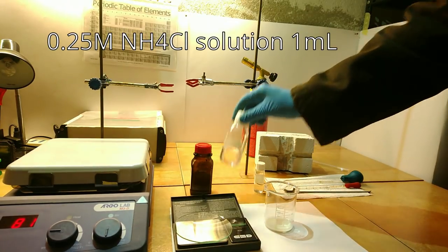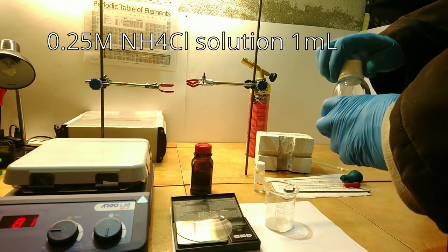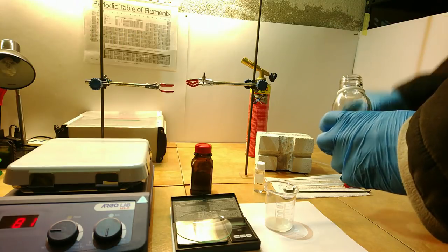Then add 1 milliliter of a 0.25 molar ammonium chloride solution. This will serve as a flux.